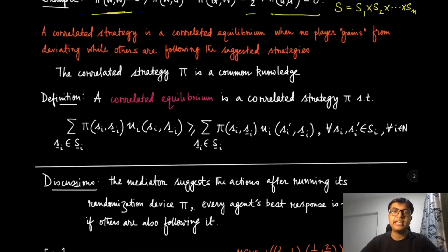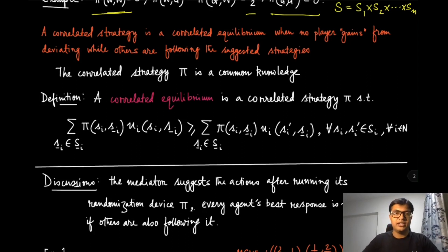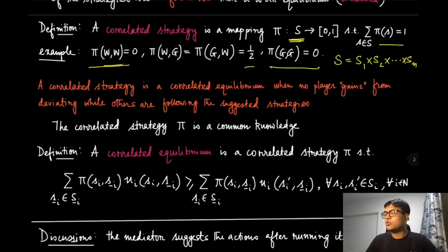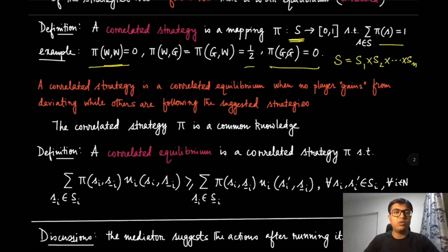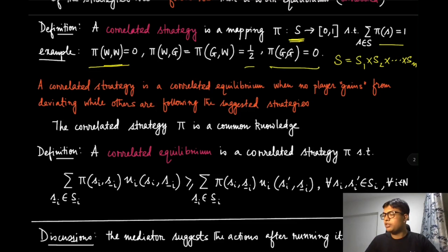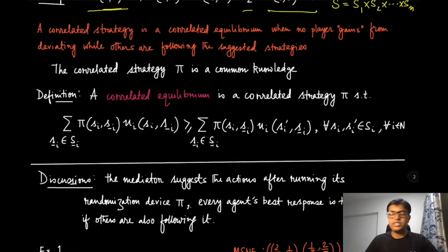Now, what is a correlated equilibrium? It has to be self-enforceable. A correlated strategy — which is the strategy of the randomization device or mediator, not of any individual player — is a correlated equilibrium when no player gains from deviating while others are following that suggested strategy. We also assume that this correlated strategy, once picked, is common knowledge. For example, the traffic light is green half the time in one direction and half the time in the other.